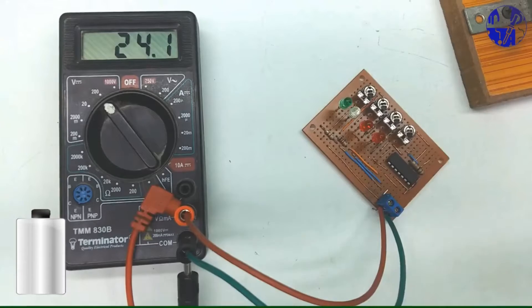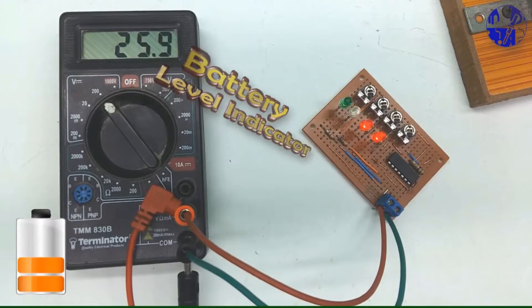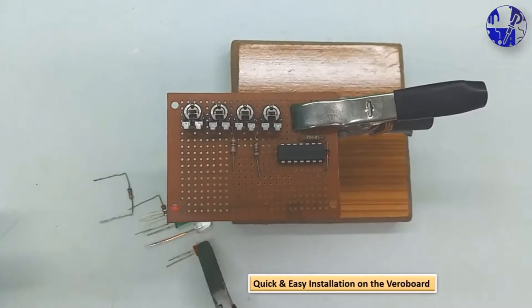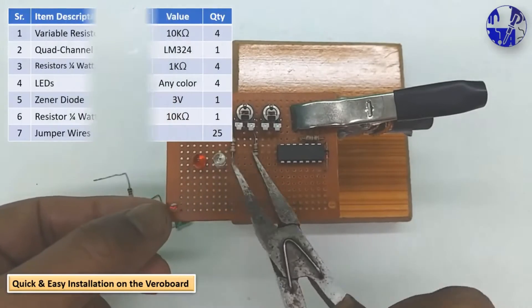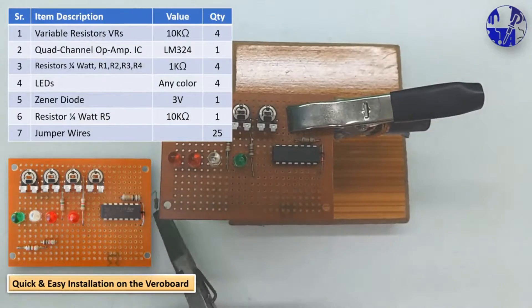In this DIY video, we will make a battery level indicator circuit. We will use four LEDs as visual indicators for different voltage levels. This project will be assembled on a Vero board. All components used are readily available and cost-effective in the market.